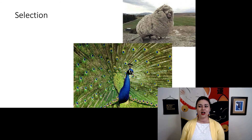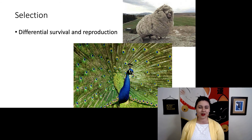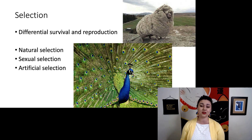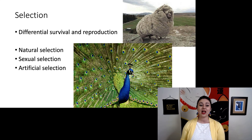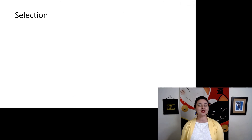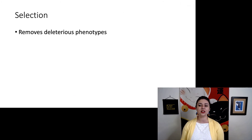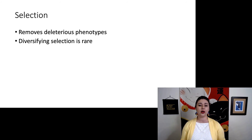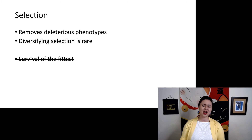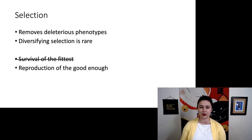Lastly, let's talk about selection — differential survival and reproduction, the stuff we learned from Darwin. There are different kinds: natural selection, sexual selection, and artificial selection. In population genetics, we don't really care which one; all we're referring to is that this is a directed, purposeful process. Through artificial selection, we got woolly sheep, and through sexual selection, we got gorgeous peacock tails that are actually detrimental to flight. Unlike the other forces, selection removes deleterious phenotypes. Diversifying selection is rare but does occasionally happen, where selection favors two different phenotypes rather than the one in the middle. Really, we should think of this not as survival of the fittest, but reproduction of the good enough.